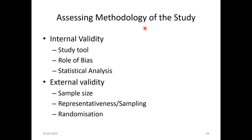When assessing methodology, look at both internal validity and external validity. Internal validity means how accurate the study is within itself; external validity is how accurate the findings are when extrapolated to the target population. Internal validity is determined by the study tool used, the role of bias, and the statistical analysis. For external validity, the most important factors are sample size, sampling method or representativeness, and randomization — the method by which intervention is allocated to study and control groups.